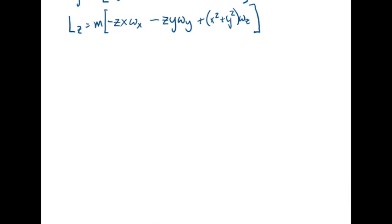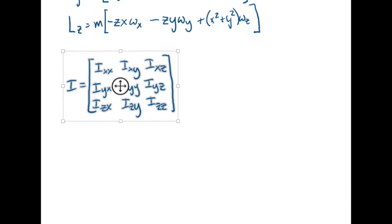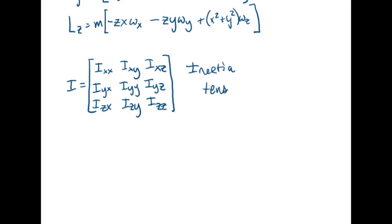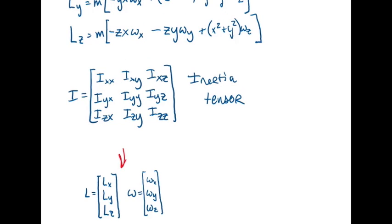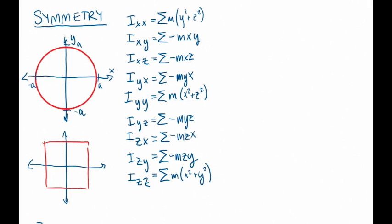A convenient way to express the products of inertia is in matrix form. This matrix is called the inertia tensor. If we express the angular momentum and angular velocity also in matrix form, then in matrix form we have that L equals I times omega. Now let's consider the role of symmetry, both reflective and axial, in the inertia tensor and the products of inertia.